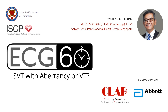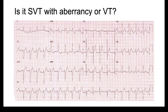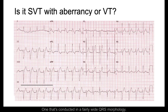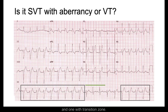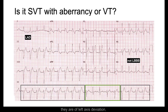ECG in 60 seconds: is this supraventricular tachycardia with aberrancy or ventricular tachycardia? A quick survey of this ECG shows two main zones — one conducted in a fairly wide QRS morphology, and one with a transition zone. We know that those conducted in the wide QRS morphology are of left axis deviation, and it is not left bundle branch block.